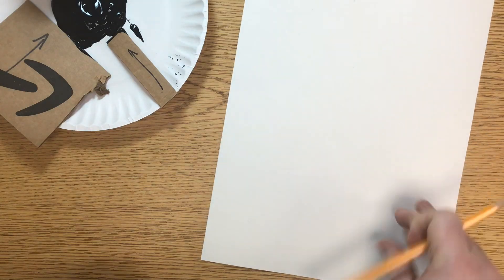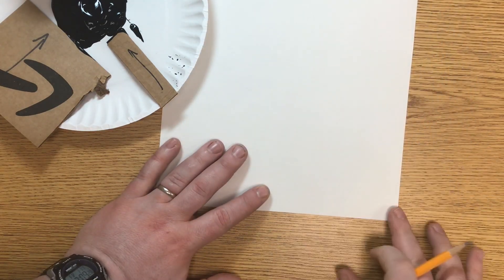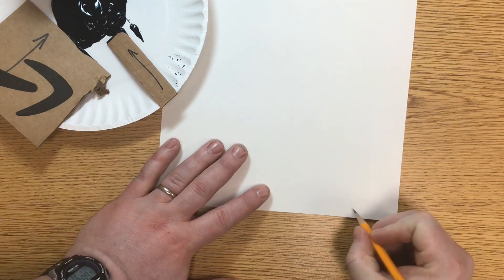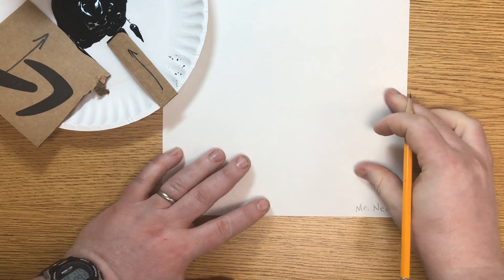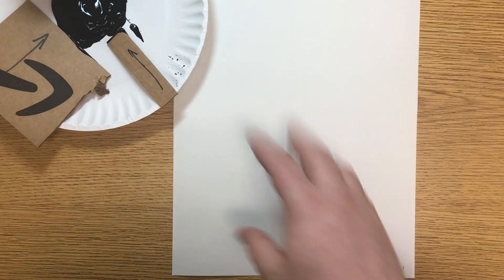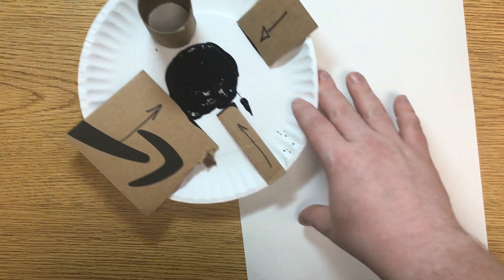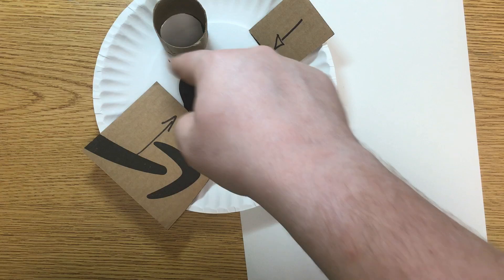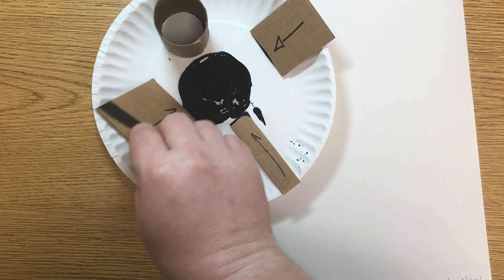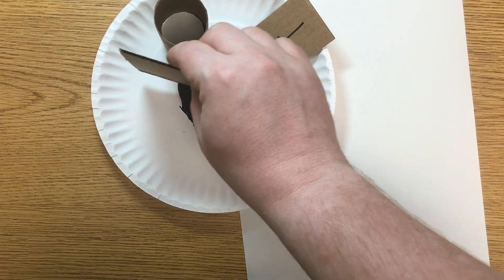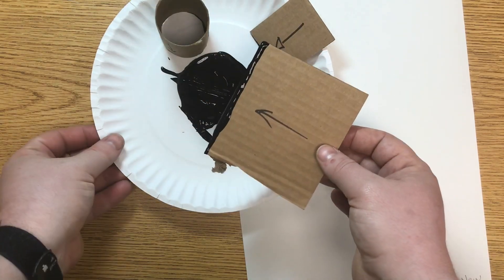I've got a pencil here to write my name. I'll go ahead and write my name at the bottom corner before I get started. Now the name of the game here is to use straight lines and perfect circles to create an architectural design and we also are trying to make it symmetrical.